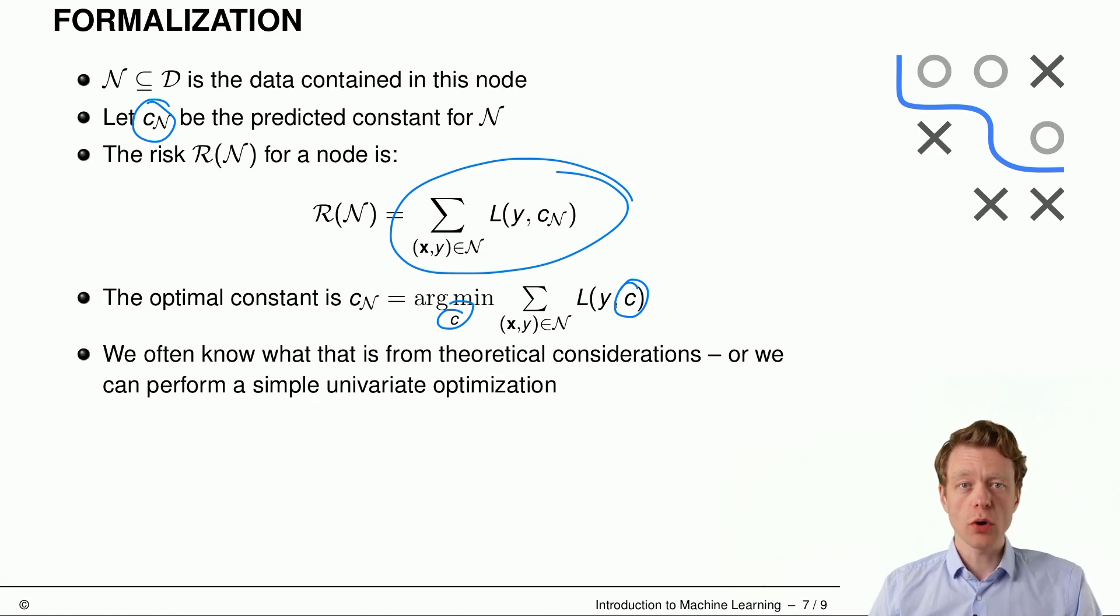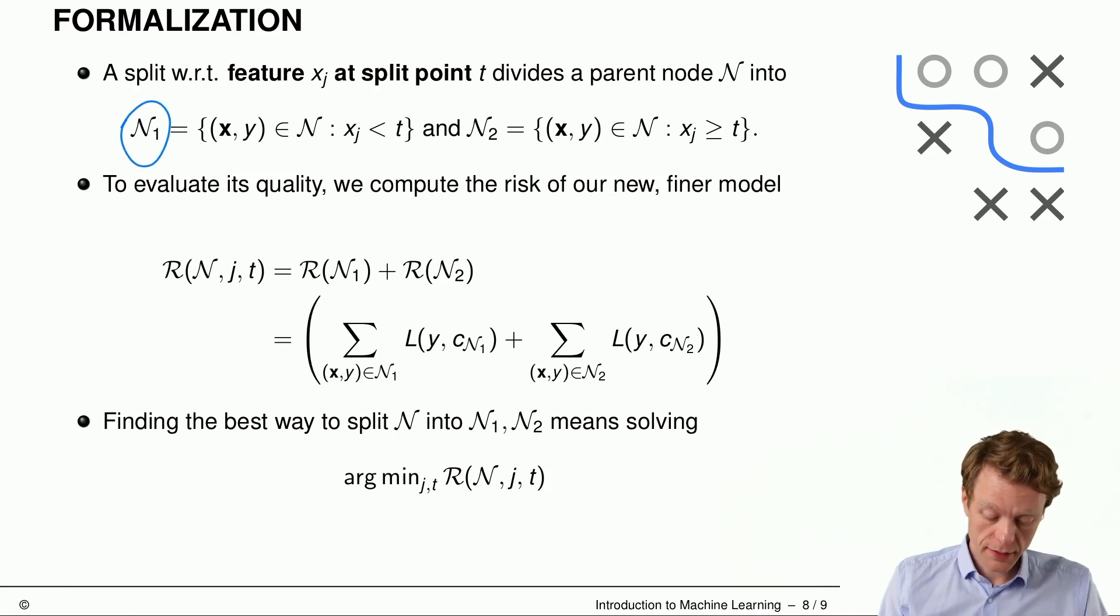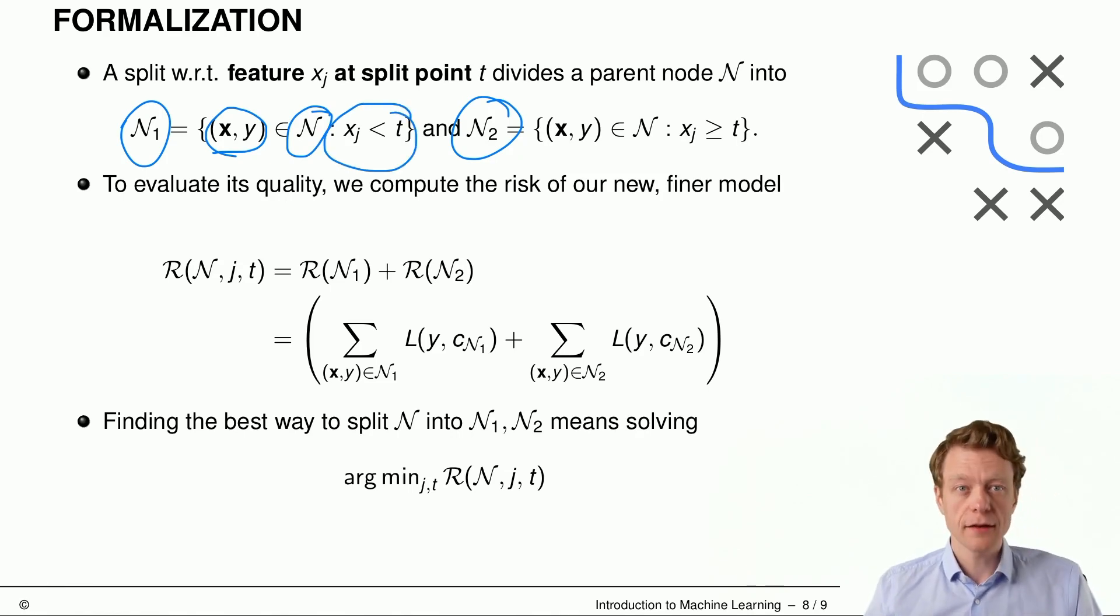If we take the L2 loss, then we already know that the optimal constant is the mean. And for example, for the L1 loss, the optimal constant would be the median of the target values. And for other loss functions, we also know this from just theoretical considerations. But we can also just perform a simple univariate optimization and find it empirically. Now we call n1 and n2 those child nodes that result by splitting the parent node n into two parts. And n1 is the set of observations that are in this parent node, of course, and where the feature value xj is smaller than t. And n2 is more or less the same thing, but we have a greater or equal than t on the right-hand side.